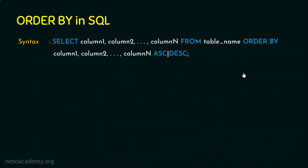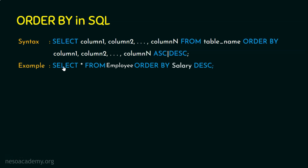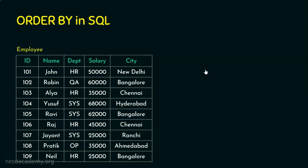We know how to sort in ascending order. To sort in descending order, the same approach applies except for the change in keyword. Instead of ASC, we use DESC. The query is: SELECT * FROM employee ORDER BY salary DESC.